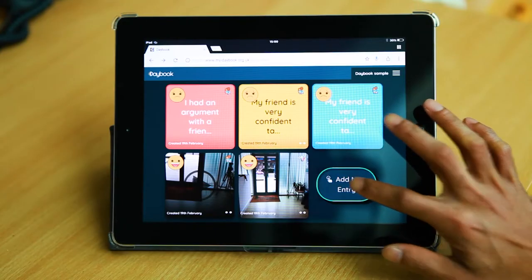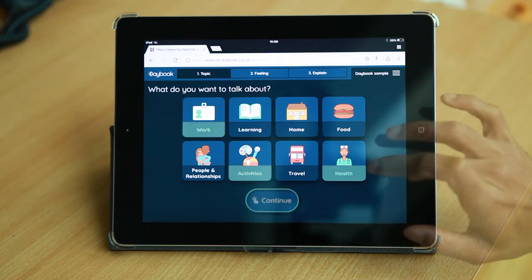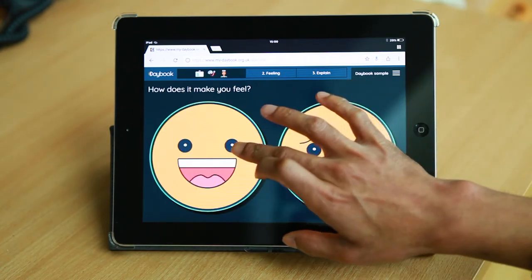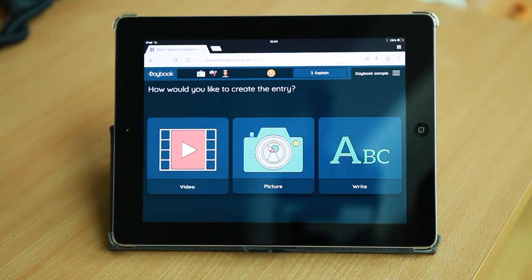When you want to add a new entry to Daybook, you can choose what you want to talk about, how you feel about it, and then add more information by taking a short video, a photo, or writing something.